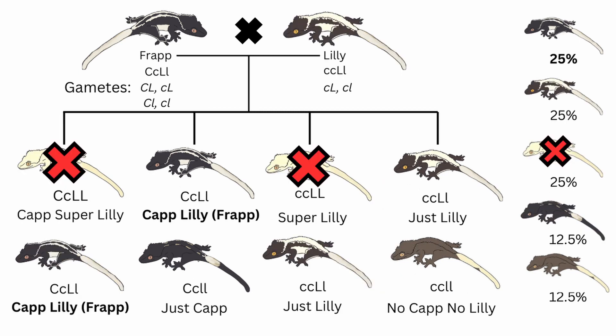When you pair a frappuccino to a lily-white, you get 25% frappuccino crested geckos, 25% lily-white crested geckos, 25% unborn or dead-right-after-hatching super lily-whites, 12.5% cappuccino crested geckos, and a final 12.5% no cap no lily crested geckos. Again, this is not an ethical pairing because there is a percentage of crested geckos that do not make it.